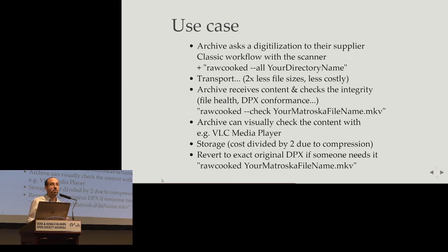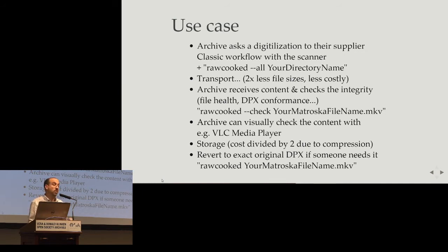After that, you can do the transport. The size of the package is two times smaller, so it is easier to transport — if you send by internet, sometimes it is two times faster, or you need fewer hard drives. When you receive the content, you can check integrity with RAWcooked --check on the MKV. This command also checks that the DPX metadata stored inside the MKV is correct, so you don't need to unpack the Matroska file to DPX again before checking that the DPX is correct.